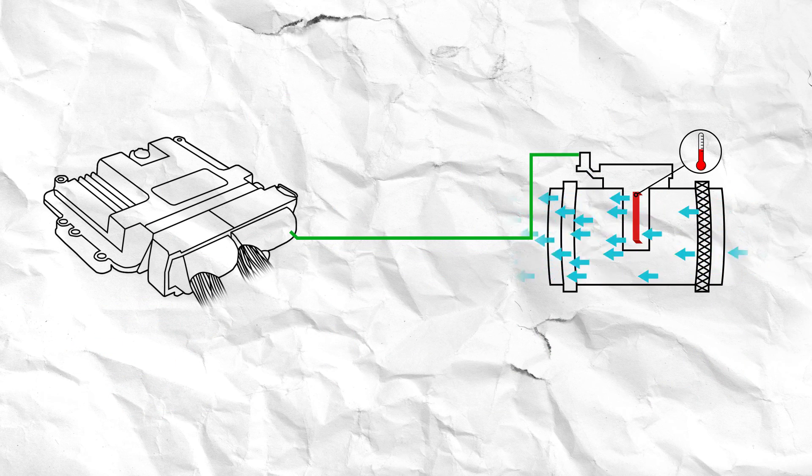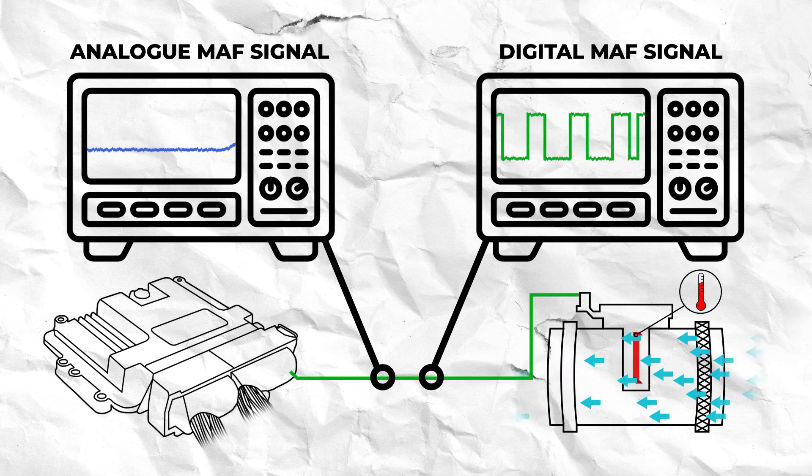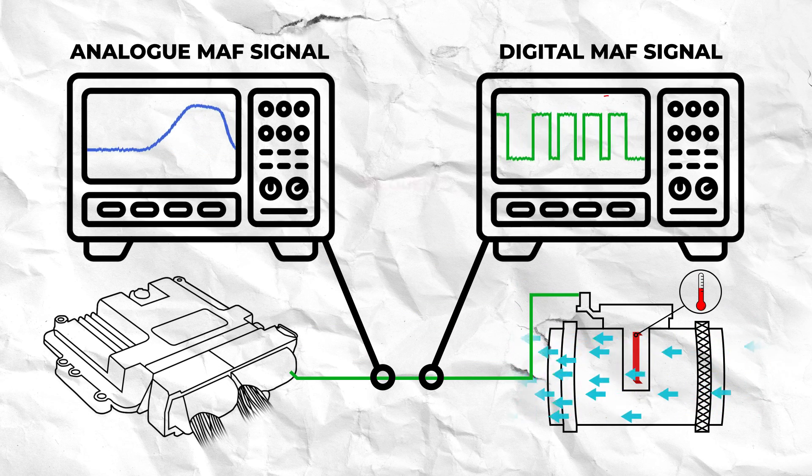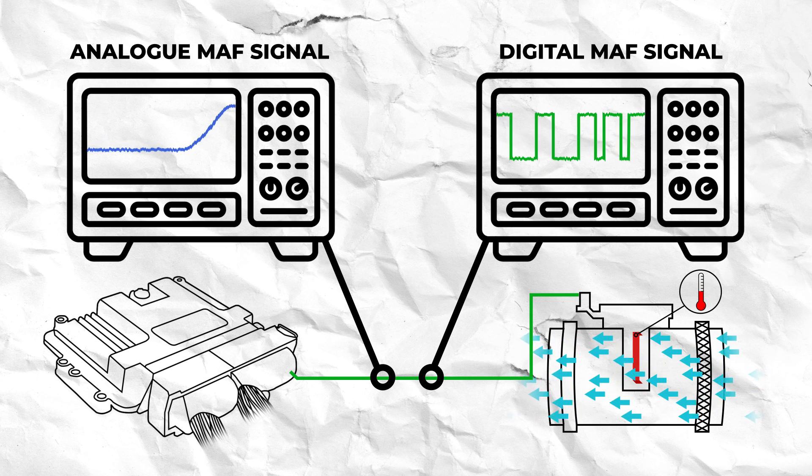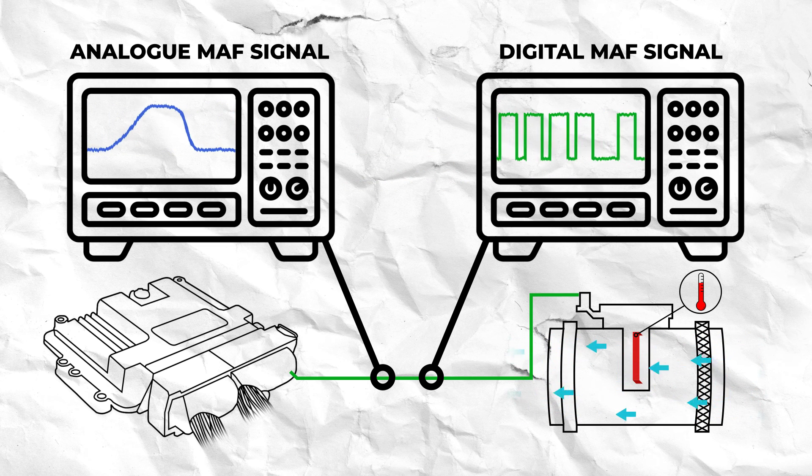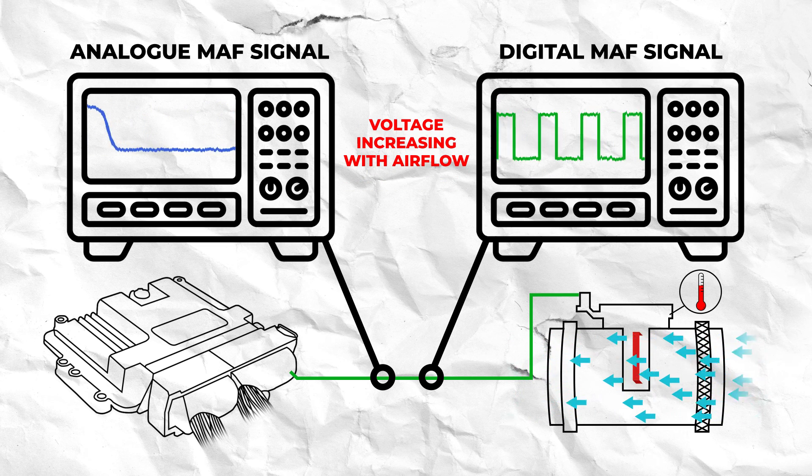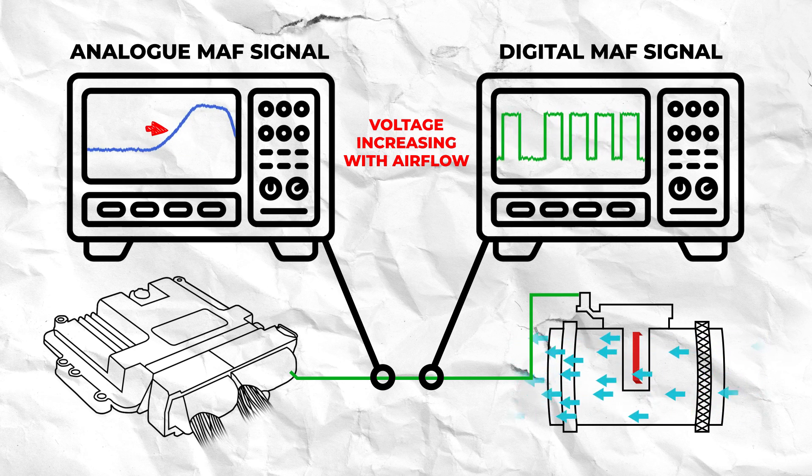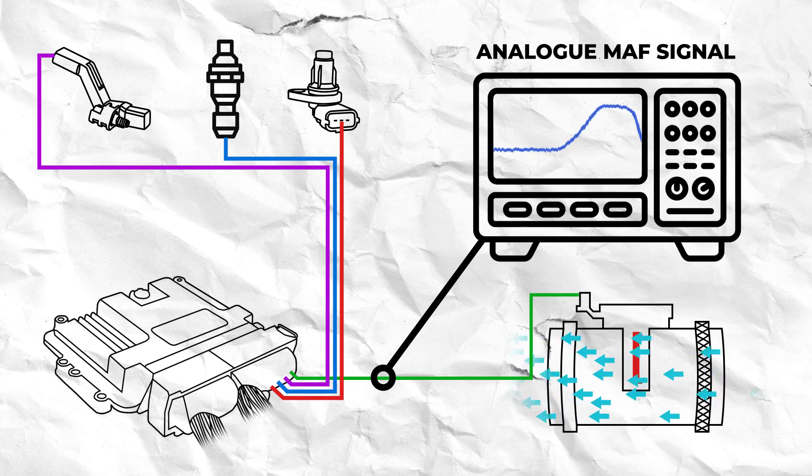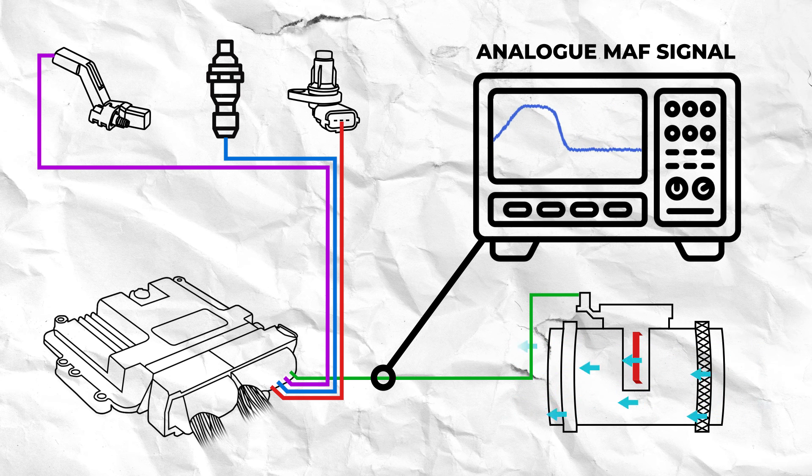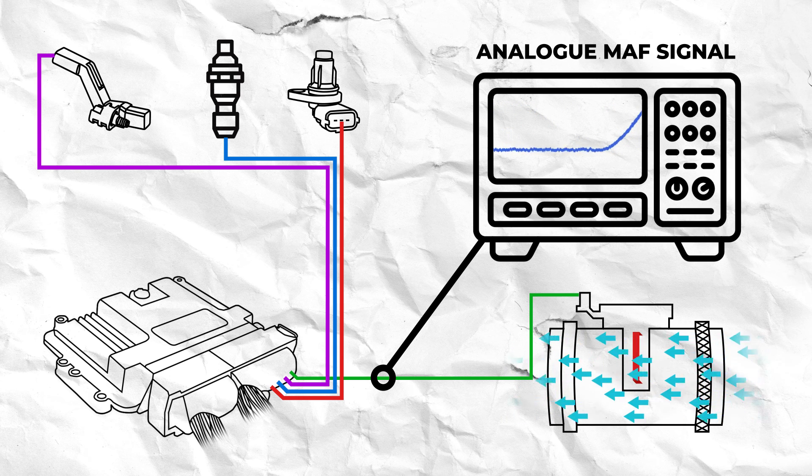Depending on the sensor design, the signal can either be analog or digital. In a digital sensor the airflow is measured by a change in the frequency of this signal, whereas in an analogue sensor the airflow is measured by a change in the signal's voltage, with the voltage increasing as the airflow does. The ECU then uses this signal along with information from multiple other sensors to calculate the optimal air to fuel ratio for efficient combustion.